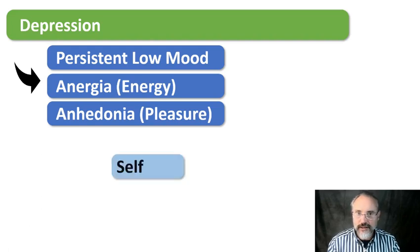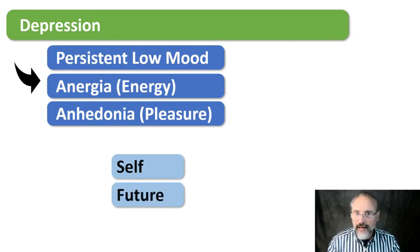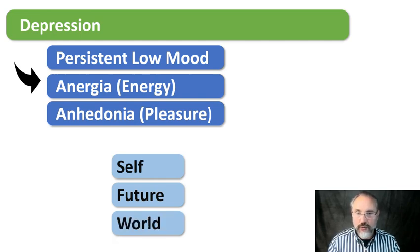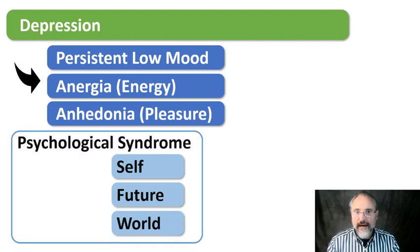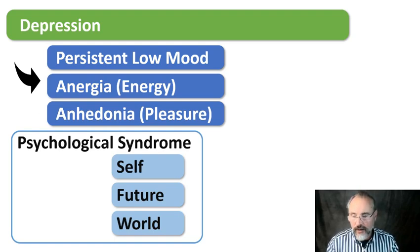There are other symptoms associated with depression. Often there are negative thoughts about the self — feelings of inferiority, guilt, blame, or shame. Also negative feelings about the future: they tend to be very pessimistic. And often very negative thoughts about the world — 'the world is a terrible place, everything is awful.' Those three ways of thinking are called the psychological syndrome of depression. The thoughts themselves don't define a depressive disorder — you need the three core symptoms — but these patterns of thought are frequently found in depressed people.